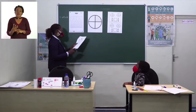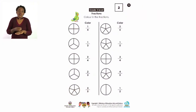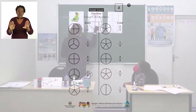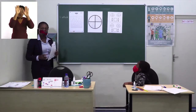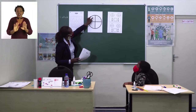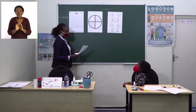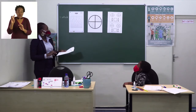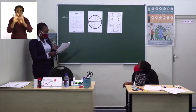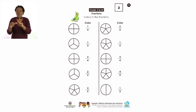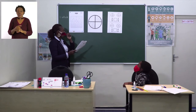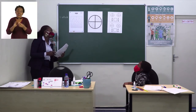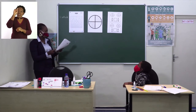Let me do another example. Two over four means we color two pieces of pizza out of one, two, three, four pieces. I want you to do the rest. You draw a circle, show the number of parts — if there are two out of five, there must be five parts — then color the number on top. Two out of five.